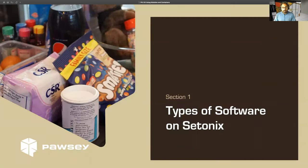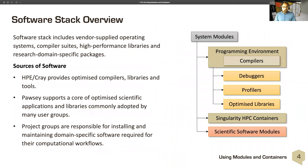Now, types of software on Setonics. The Setonics software stack includes some vendor-supplied software: an operating system, a set of compilers, some high-performance libraries, and some research domain-specific packages. There's also Palsy-provided software. Sources of software include HP Cray, which is the hardware provider — they provide optimized compilers, libraries, and tools.